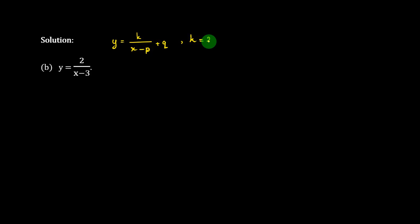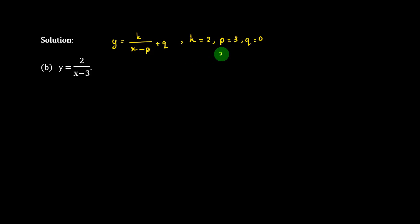2, here is the p-r of 3. 2, here is 0. h equals 2, here is the p-r of 4. 2, here is the y equals 4, and the horizontal asymptote is x equal to 3.